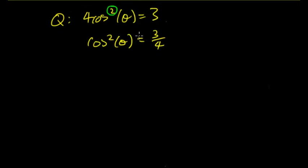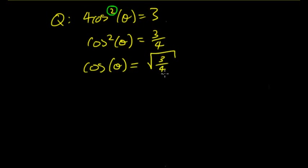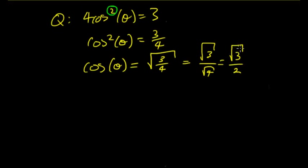We want to isolate the trigonometric function by itself. We have cos²θ = 3/4, and we square root both sides to get cosθ = √(3/4). You can split the square root to get √3 over √4. Since √4 = 2, we get cosθ = √3/2, or more precisely, plus or minus √3/2.